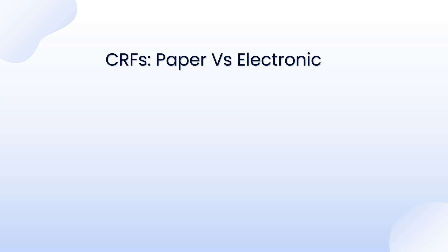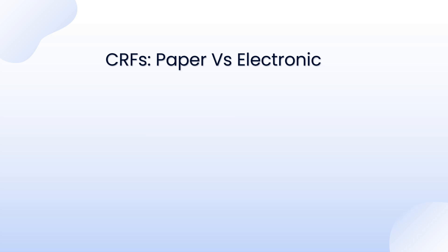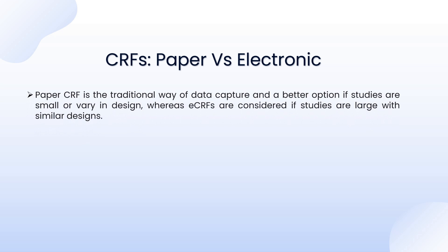There are two types of case report form: paper and electronic. Initially, when clinical trials were being conducted in the last century, paper case report forms were used. But with the advent of technology, case report forms have moved into digital formats. If you're a clinical research professional, you likely work on electronic data capture systems. Please comment which EDC system you prefer — I personally like Veeva Vault. The paper CRF is the traditional way to capture data and a better option if studies are very small and do not vary much in design. The electronic CRF is considered optimal for large, global, multi-site studies where the dataset is large.